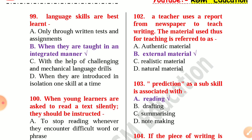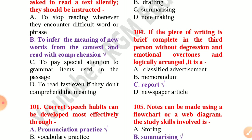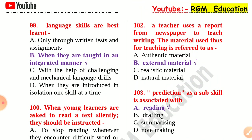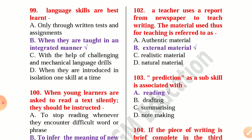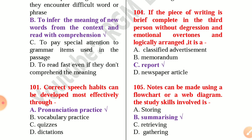Number 99: Language skills are best learnt when they are taught in an integrated manner. Question 100: When young learners are asked to read a text silently, they should be instructed to infer the meaning of new words from the context and read with comprehension. Number 101: Correct speech habits can be developed most effectively through pronunciation practice. Question 102: A teacher uses a report from a newspaper to teach writing — the material used is referred to as external material. Question 103: Prediction as a sub-skill is associated with reading. Question 104: If a piece of writing is brief, complete, in the third person, without digression and emotional overtones, and logically arranged, it is a report.